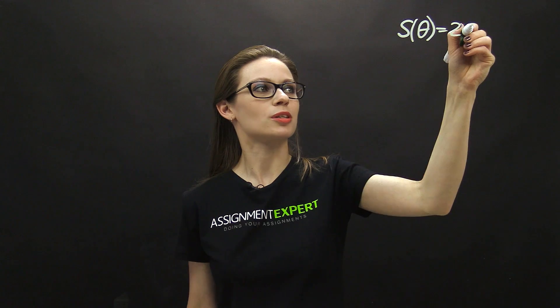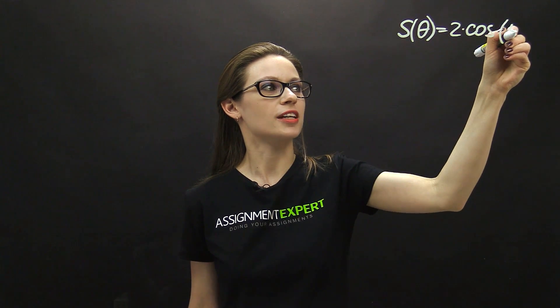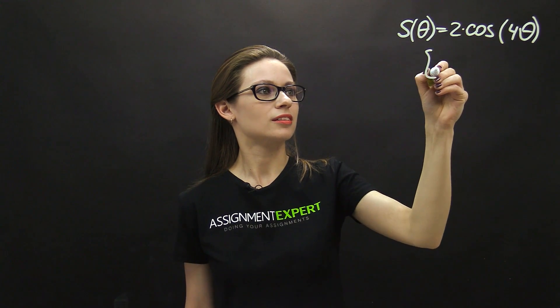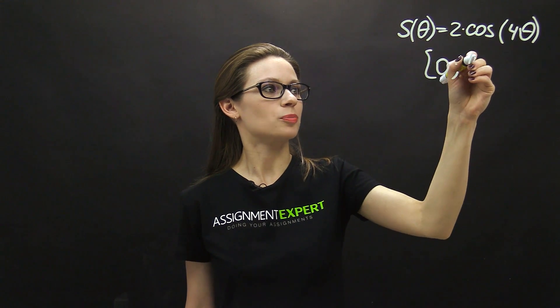Here is the curve. S of theta equals 2 times cosine of 4 theta, and the limits are 0 and pi over 4.